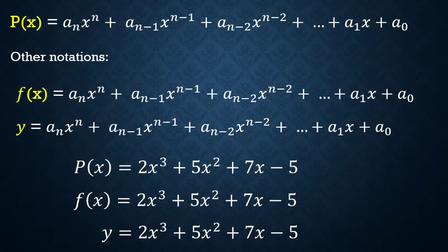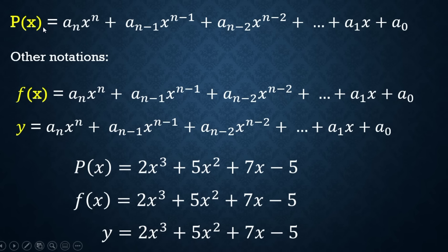A polynomial function can be written as p(x), f(x), y, or other letters like g(x) or m(x). For example, p(x) = 2x³ + 5x² + 7x − 5 can also be written as f(x) = 2x³ + 5x² + 7x − 5, or y = 2x³ + 5x² + 7x − 5.